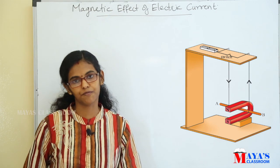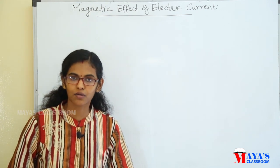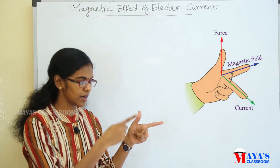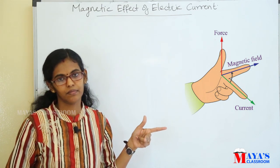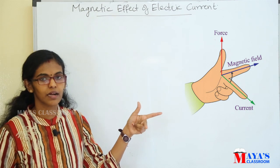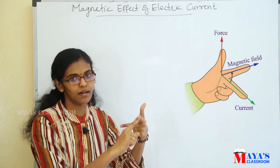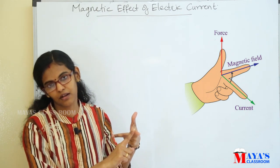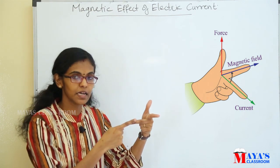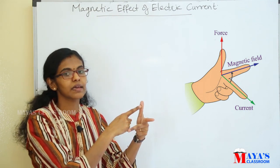We have a rule — that is Fleming's Left-Hand Rule. This tells us the direction of the conductor's movement. In the left hand, there are three factors: the forefinger, middle finger, and thumb — all mutually perpendicular to each other. The forefinger represents the direction of the magnetic field. The middle finger represents the direction of current. The thumb indicates the direction of force — that is, the direction of motion of the conductor.